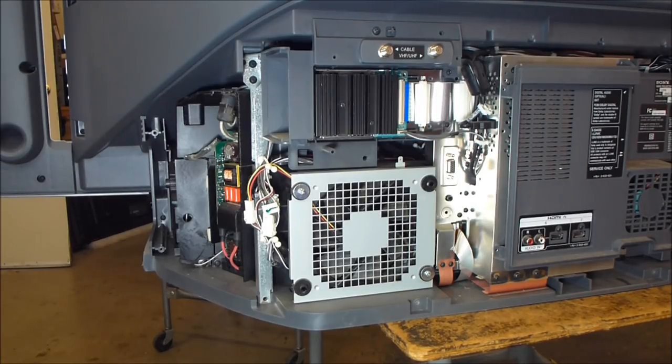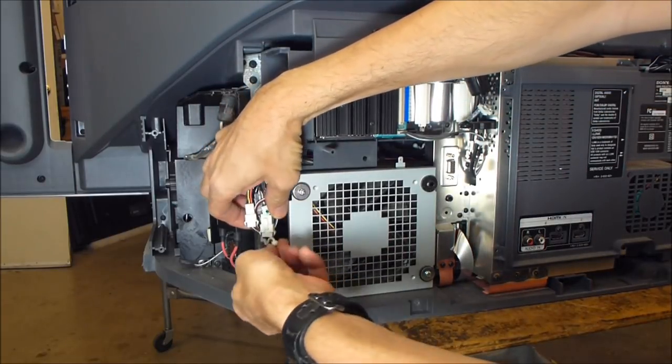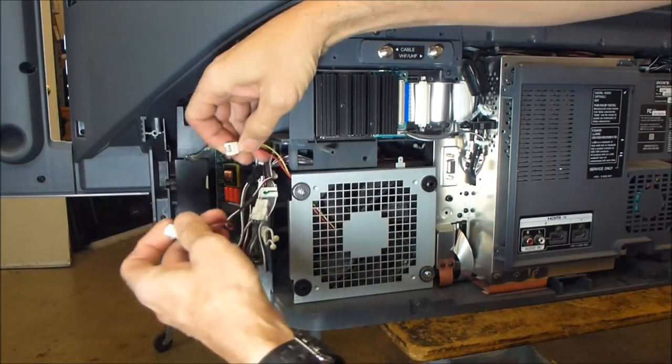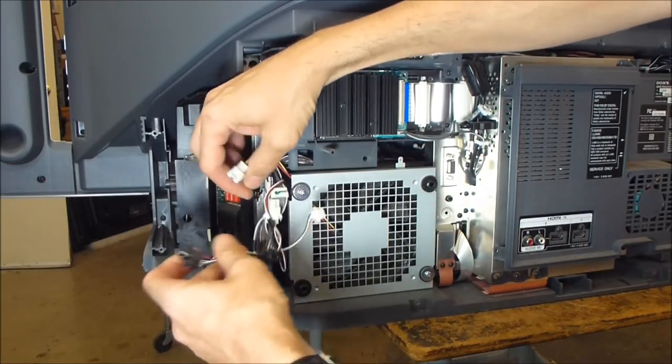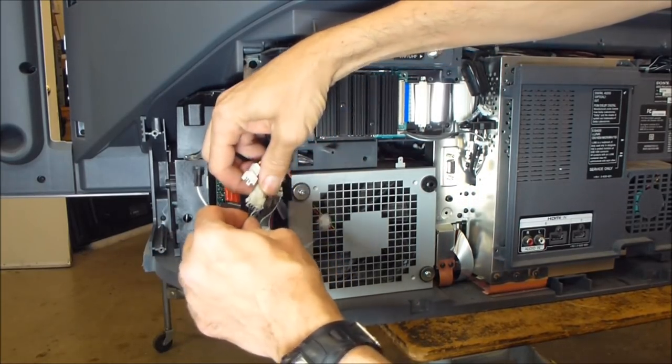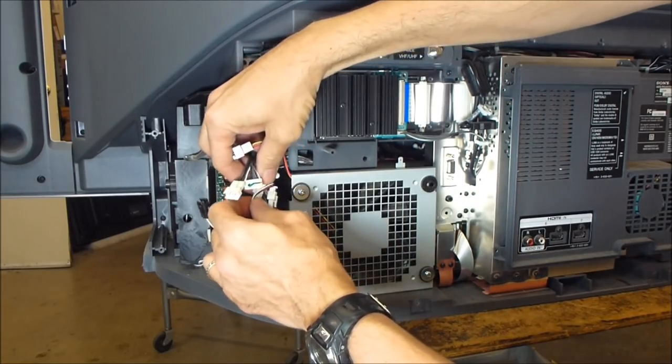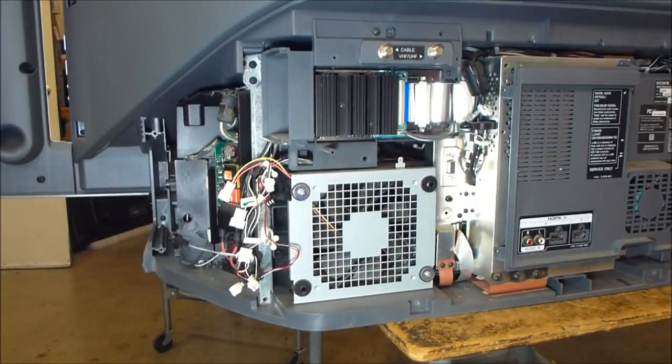So we're going to start by disconnecting this bundle of cables that connects the fans and the sensors right here. And this is going to separate - that's one of the fans, this is the temperature sensor, the other fan, and ballast control. So I'll start by disconnecting those leads right there.